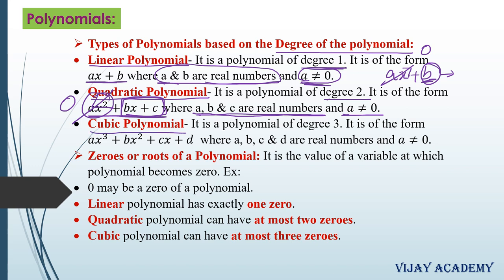For a cubic polynomial, if the degree is 3, it is called a cubic polynomial. The standard form is ax cubed plus bx square plus cx plus d, where a, b, c, d are real numbers and a is not equal to 0. If a becomes 0, the term with degree 3 becomes 0, and we are left with a polynomial of degree 2, which cannot be considered a cubic polynomial.